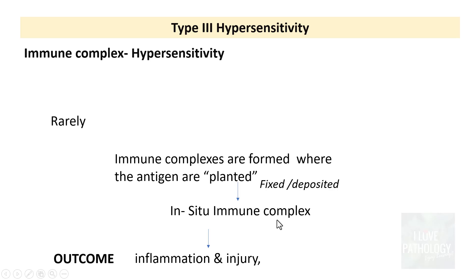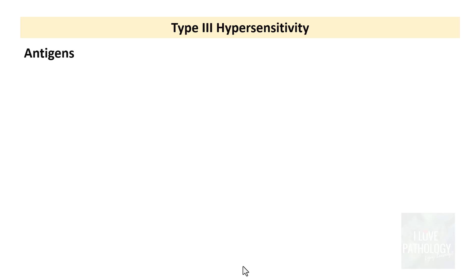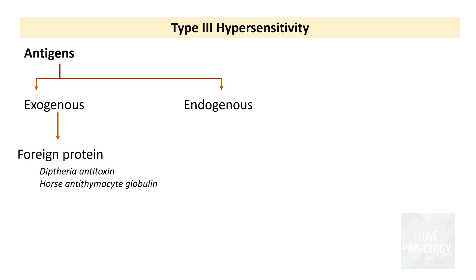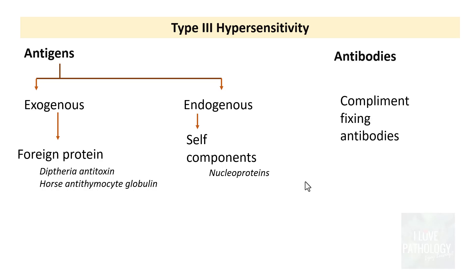This kind of hypersensitivity reaction is seen in some forms of glomerulonephritis. Antigens can be either exogenous or endogenous. Exogenous examples include foreign proteins like diphtheria antitoxin derived from horse antiserum. Endogenous antigens include cell components such as nucleoproteins, implicated in systemic lupus erythematosus. The antibodies are usually complement-fixing, either IgG or IgM, and very rarely IgA.